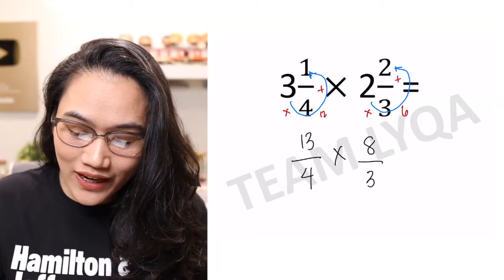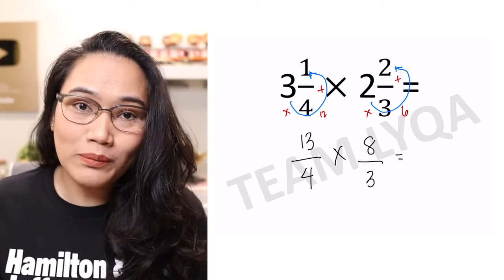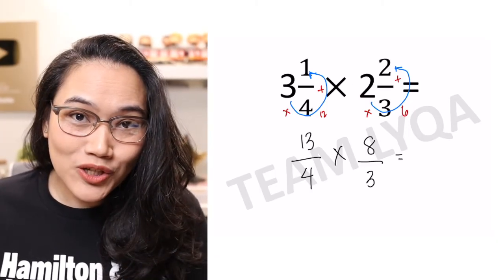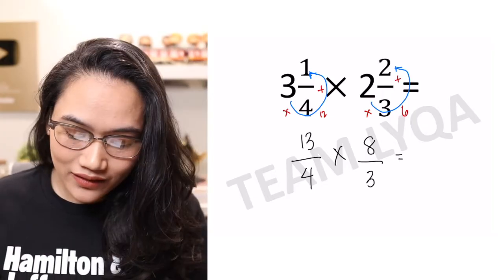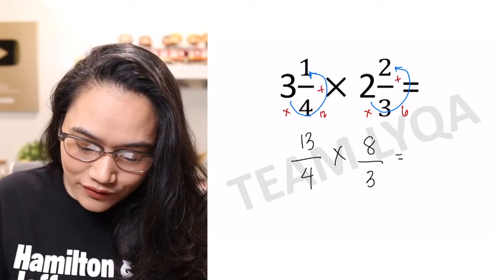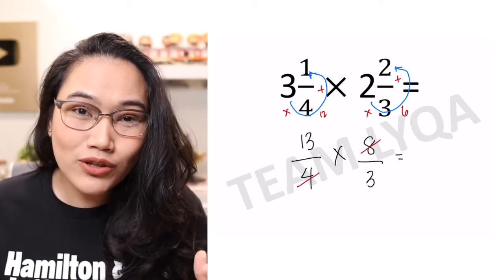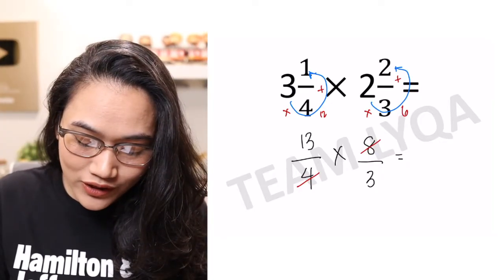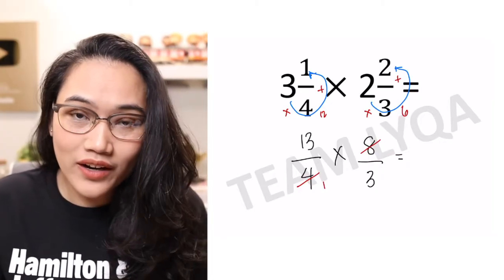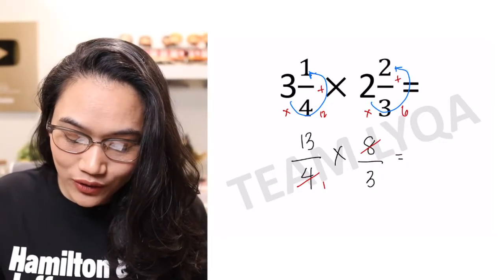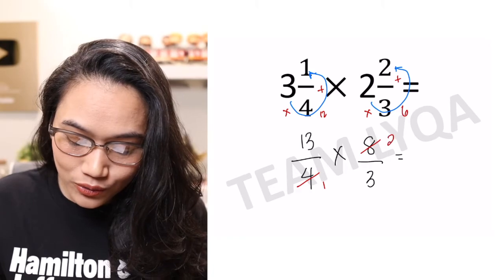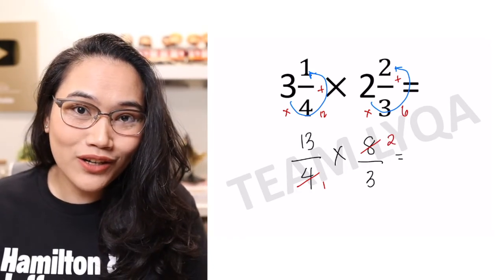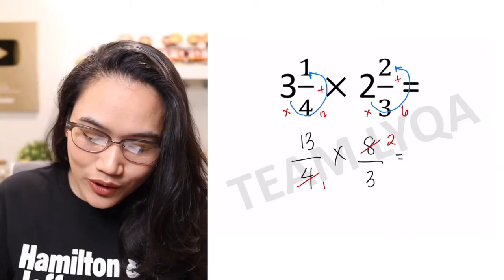Then if there's anything you can cancel, you can do that. Here we have 8 and 4 — they're both divisible by 4. 4 divided by 4 is just 1, and 8 divided by 4 is 2. Now 13 and 3, there's nothing we can do with them — they're both prime numbers.